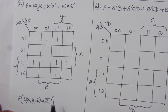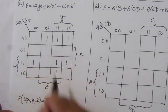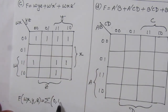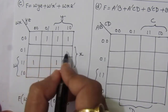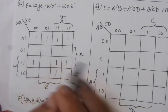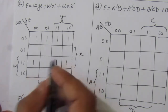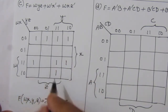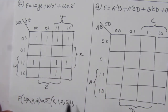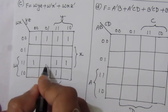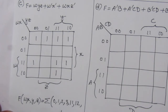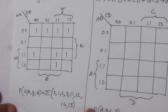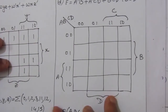For w x z bar: w x is one one — this row — and z bar is the first and fourth columns, so we put one here. From the completed map we can write the sum of minterms expression as sum of 0, 1, 2, 3, 8, 9, 10, 11, 12, 14, and 15.